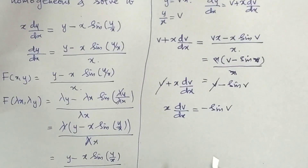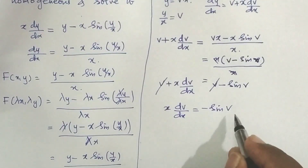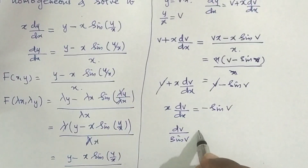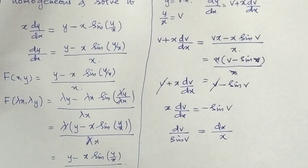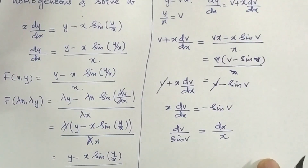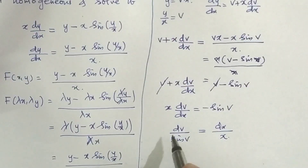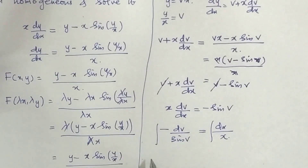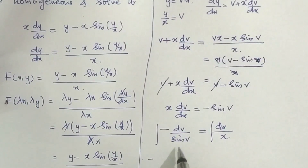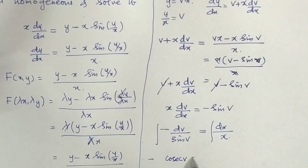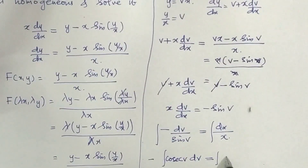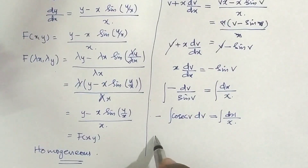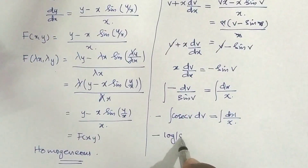Separating variables: dv / sin v = −dx / x, i.e., cosec v dv = −dx / x. Integrating both sides: integral of (1/sin v) dv = −integral dx/x. The left side gives −cos v, and the right side gives −log|x| + log c.